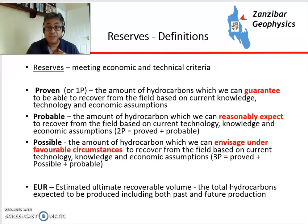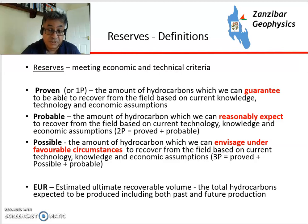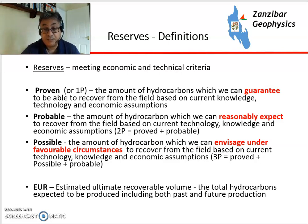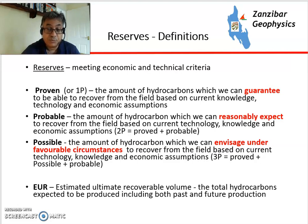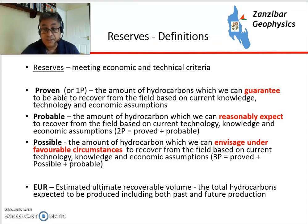Reserves need to meet technical and economic criteria such as prices, costs, and other economic assumptions as well as all the technical assumptions involved. Proven is something where we can guarantee the volume that is there — that's the lowest case. Probable is the volume that we can reasonably expect to recover, so it's what we're really likely to get. And possible is if things go really right for us under really favorable circumstances.